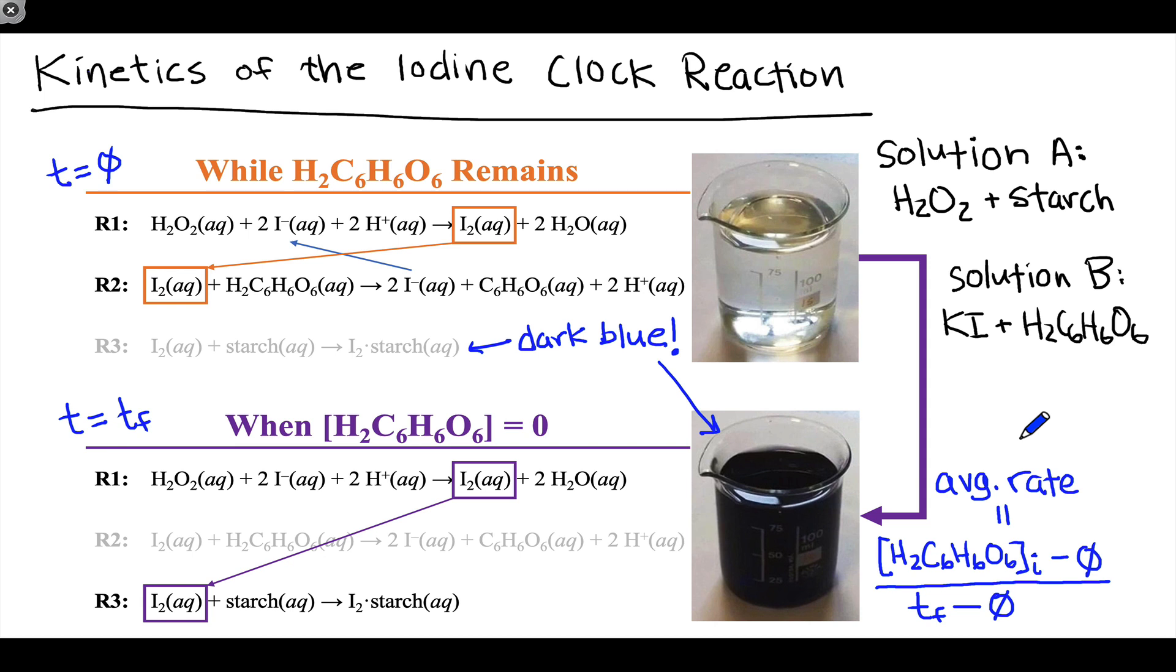That average rate may or may not depend on the concentrations of hydrogen peroxide and iodide that we use. By systematically varying our initial concentrations of H2O2 and I-, we'll be able to see whether and how each of those reactants influences this average rate of the reaction and thus what its kinetic order is in the overall reaction.